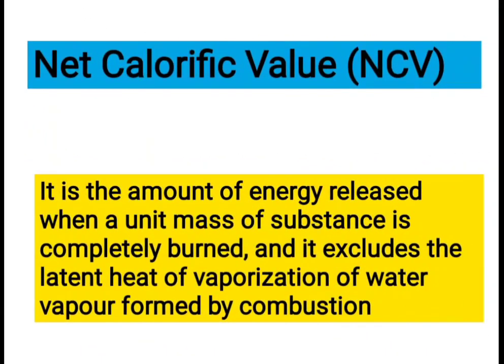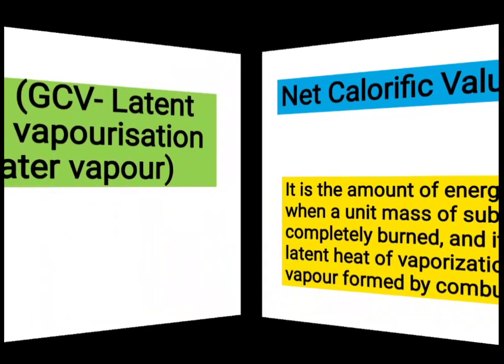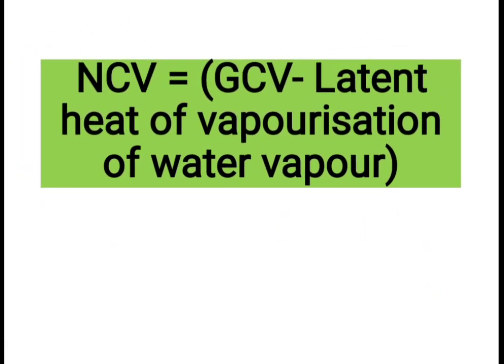What is net calorific value? It is the amount of energy released when a unit mass of a substance is completely burned, and it excludes — note the point — it excludes the latent heat of vaporization of water vapor formed by combustion. The relationship is: Net Calorific Value = Gross Calorific Value − Latent Heat of Vaporization of water vapor formed. Thank you.